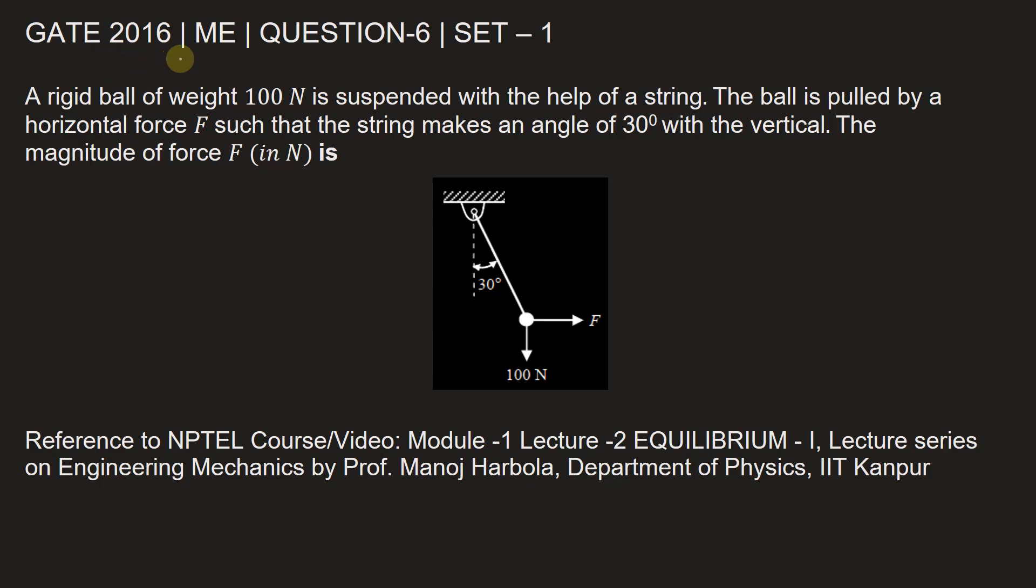This question is from GATE 2016 Mechanical Engineering paper, Set 1, Question number 6. A rigid ball of weight 100 Newton is suspended with the help of a string. The ball is pulled by a horizontal force F such that the string makes an angle of 30 degrees with the vertical. The magnitude of force F in Newton is...